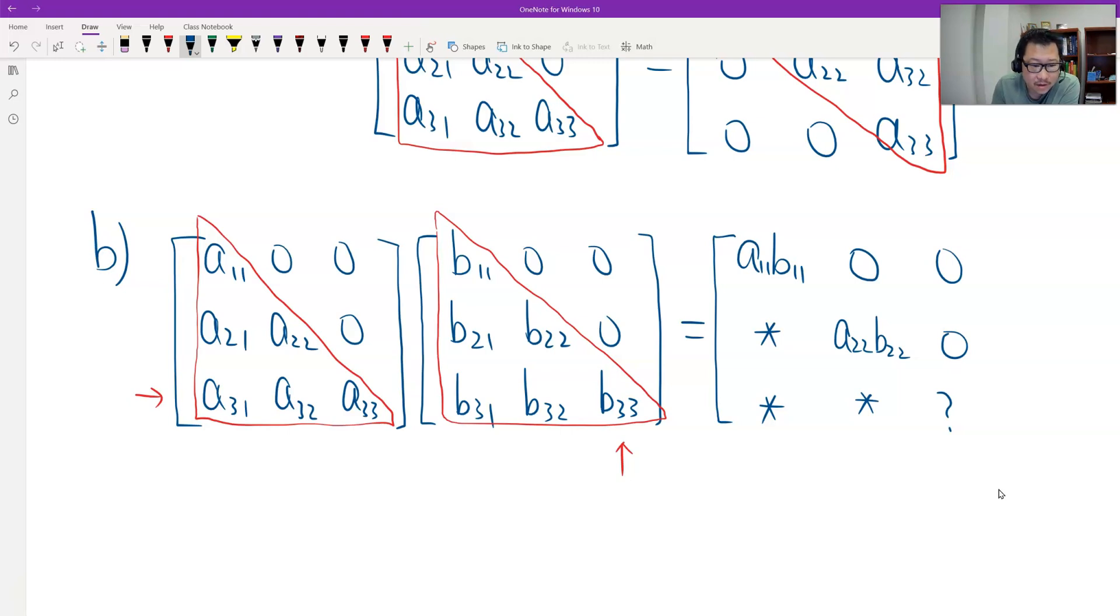Okay, which is the third row, multiply the third column, the sum of products. What do we get? We get A33 B33. That should be the last one. See, A33 B33. Okay, and here at this number, probably non-zero, probably zero, does not matter. What do we get? We definitely get a lower triangular, right?